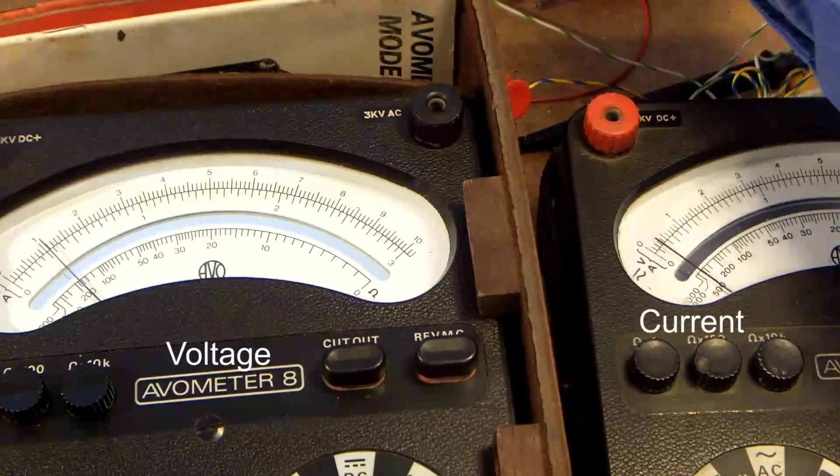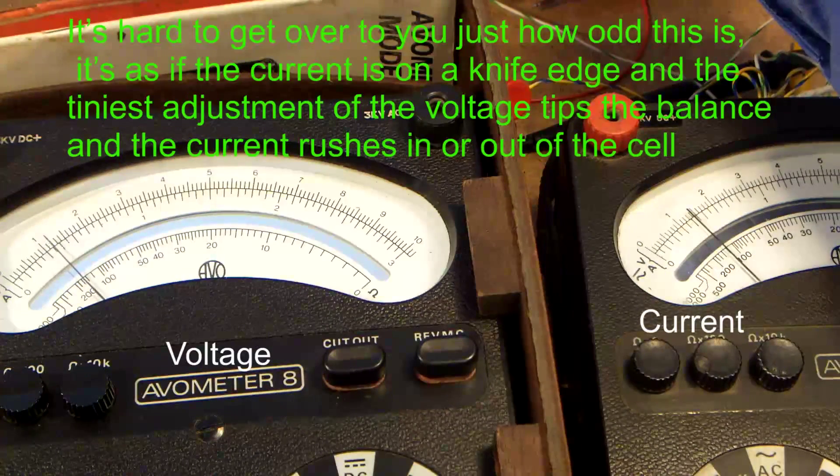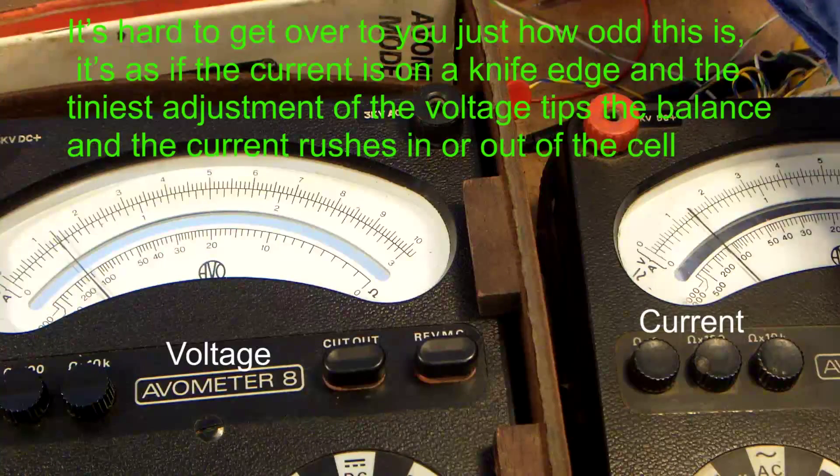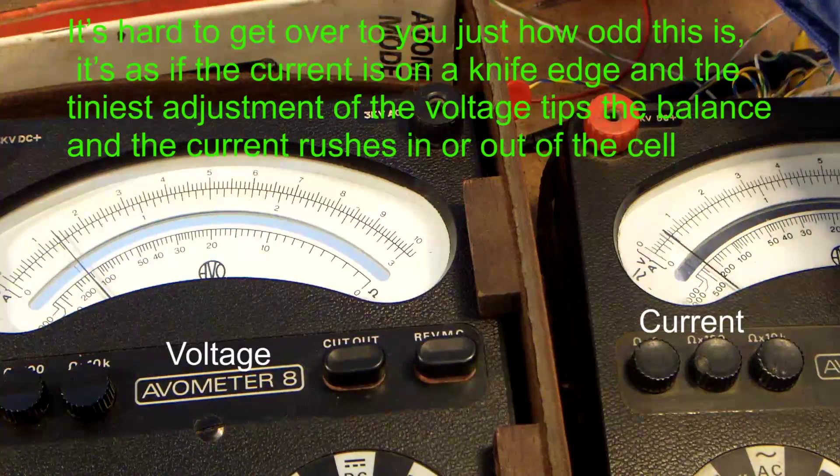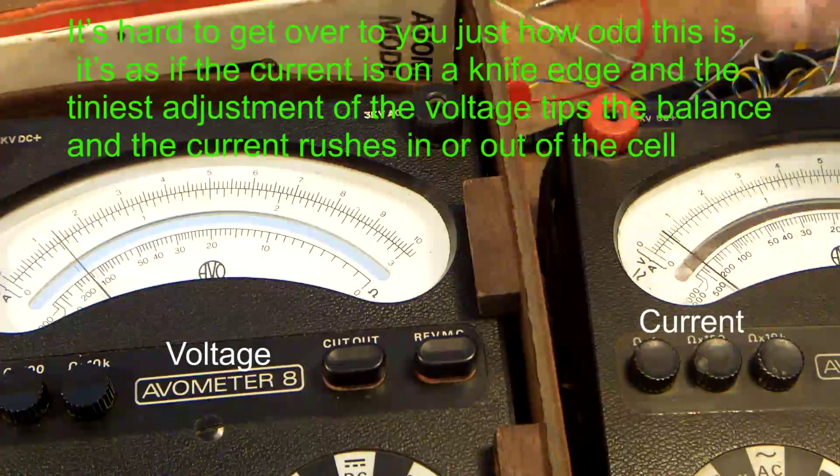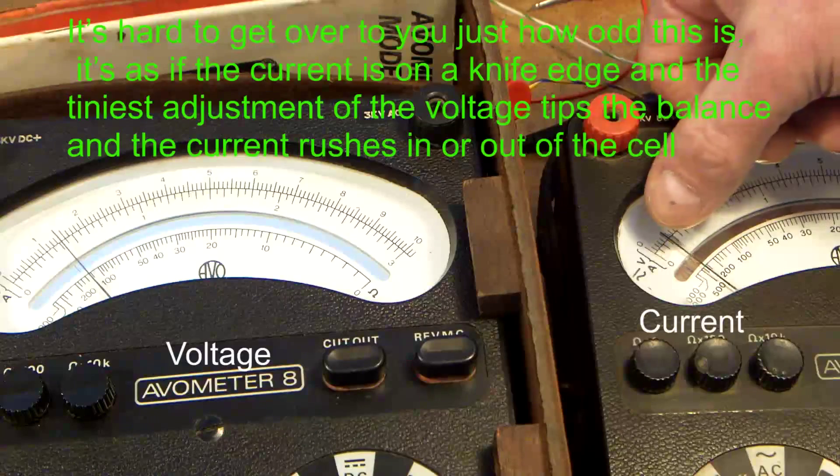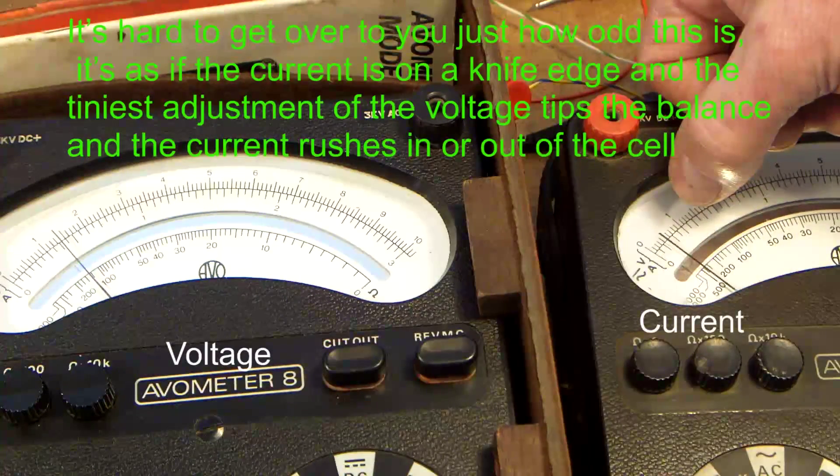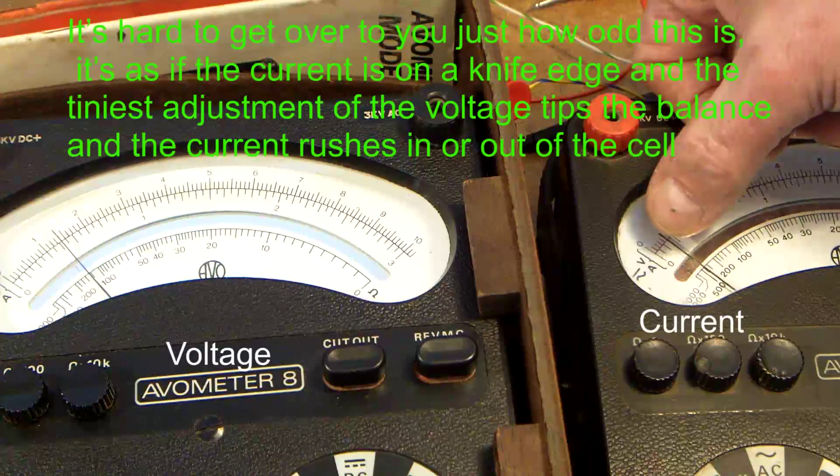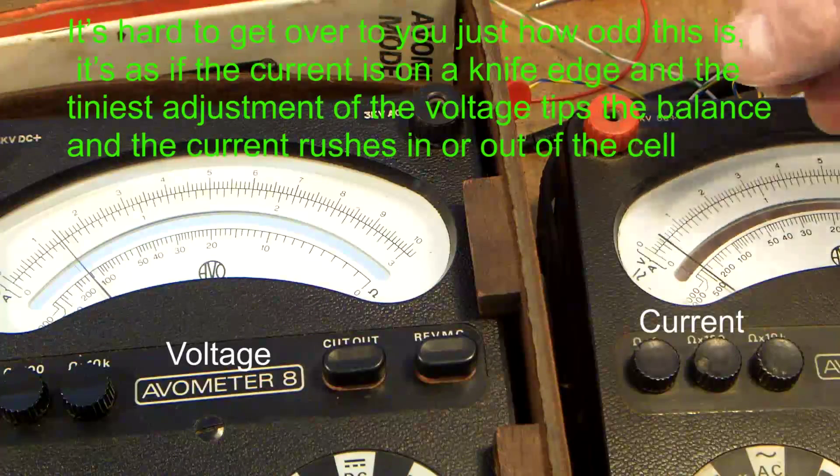And now I'm going to take the voltage off to 0.4 of a volt, where it's twitchy. 0.4 of a volt there, and I've got, that's 0.1, that's 1, 2, 3, 4, 0.04 milliamps.